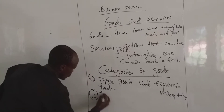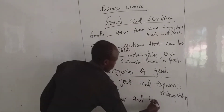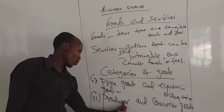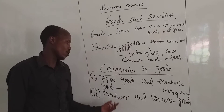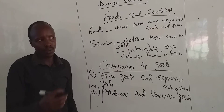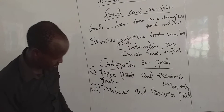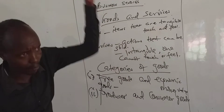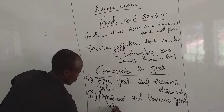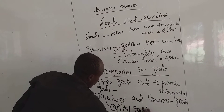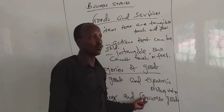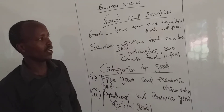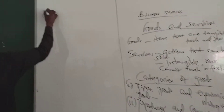Another category of goods is producer and consumer goods. As the name suggests, producer goods are goods which are used to produce other goods. For example, a tractor — you can take a panga or a jembe, go to the farm, and produce with it. That is an example of producer goods, also called capital goods. They are used to produce other goods. Consumer goods, on the other hand, are goods which are ready to be consumed by the final person — that final person we call a consumer. They are ready to be consumed.